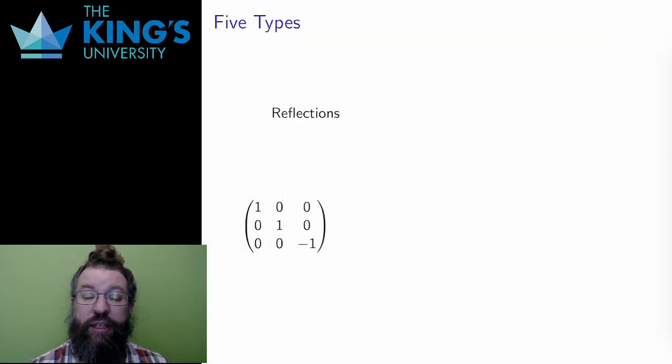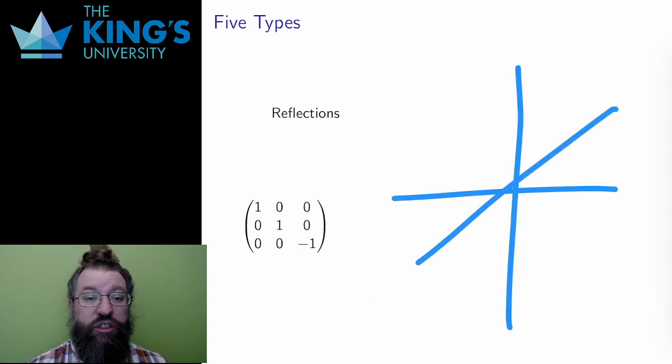Reflections are next. In R2, reflections were over a line. In R3, reflections are over a plane, like reflections in a mirror.